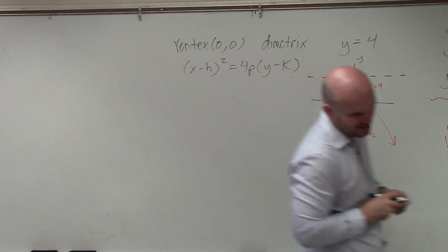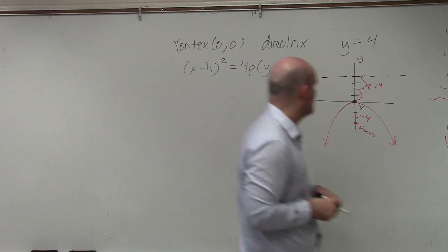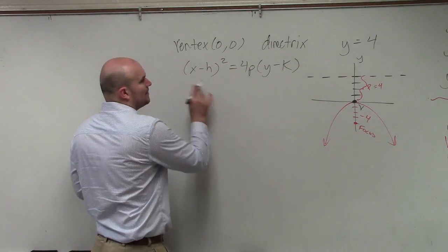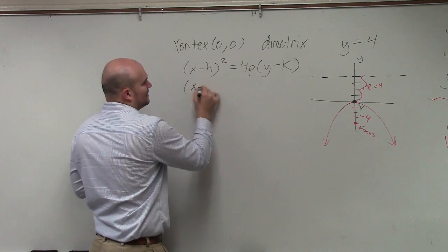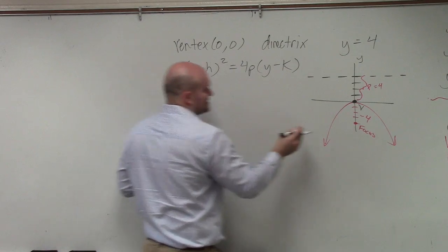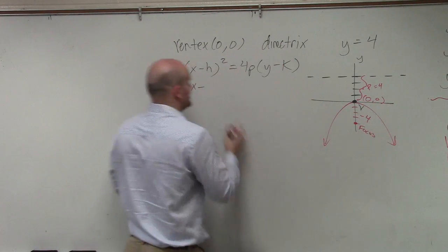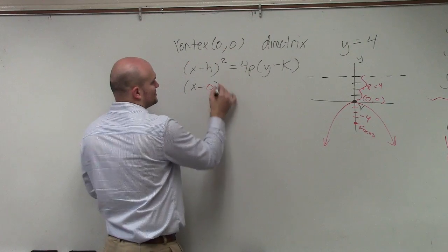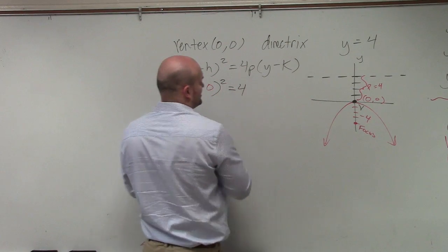And all they're asking for is write the equation. So I know my h and k, my vertex, is at 0, 0. Once you guys get good at this, you don't need to write in 0, 0. But just for right now, I'm just going to do that.